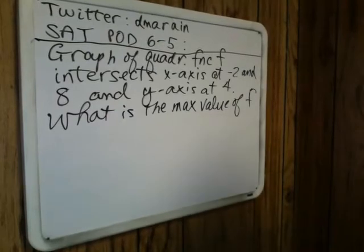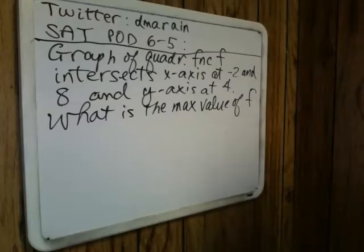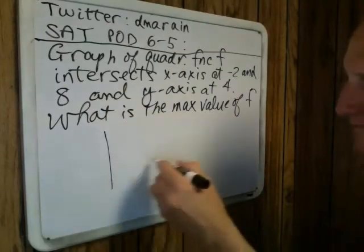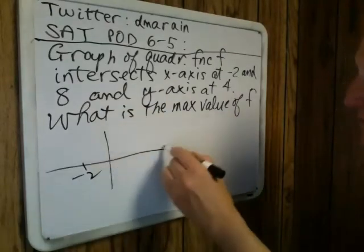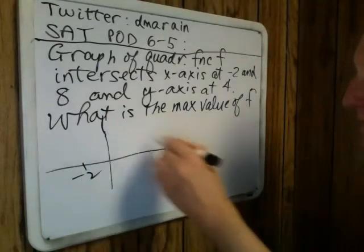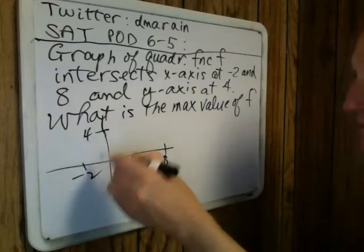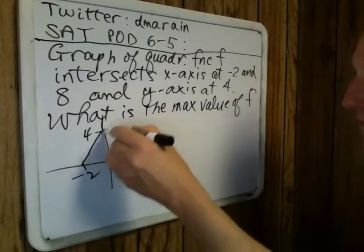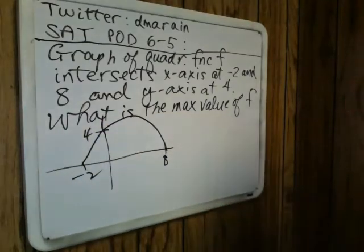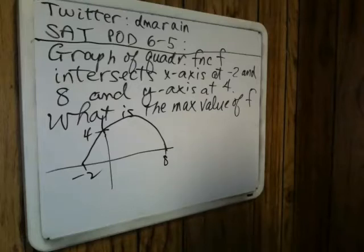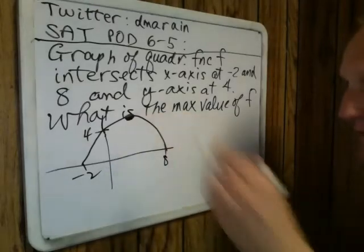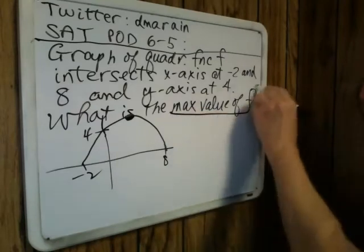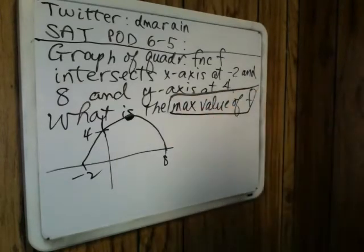I'm going to draw a graph, and this is what a student should be doing. Rather than jumping into a formula for quadratic functions or roots or whatever, just sketch it. We have an x-intercept of negative 2, another x-intercept of 8, and a y-intercept of 4. So we have some kind of picture that looks like this — the graph of a parabola opening downward. It's going to have some maximum value, and it's critical that students understand what is being asked for.